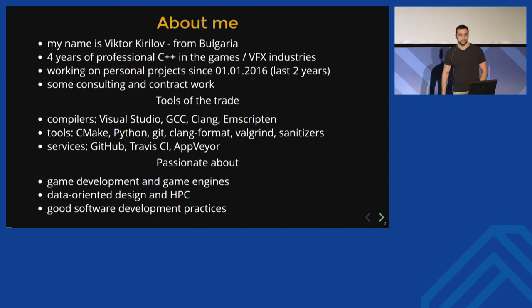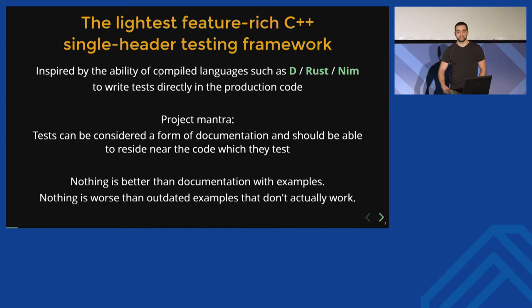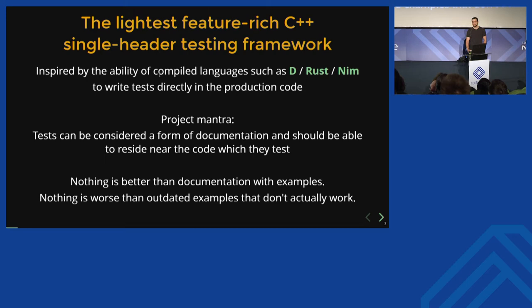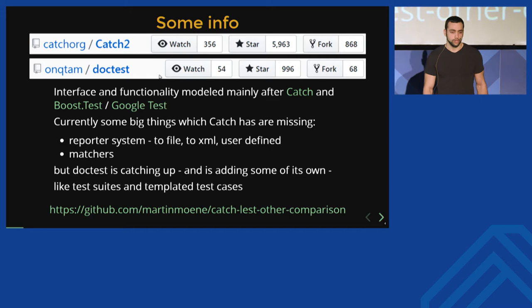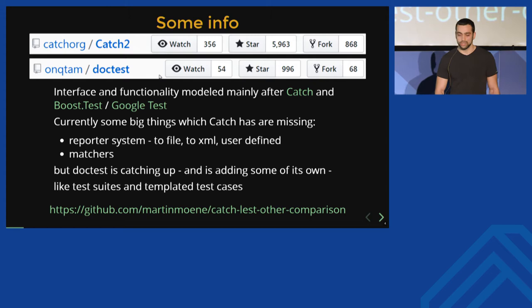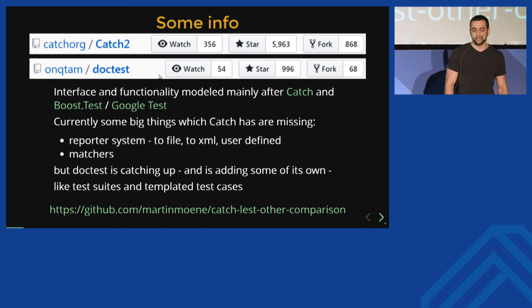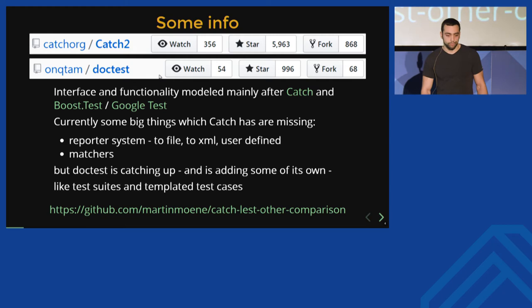I like to call Doctest the lightest feature-rich C++ single-header testing framework. It's inspired by the ability of other compiled languages such as D, Rust, and Nim to have tests written directly in the production code. The project mantra is that tests can be considered a form of documentation, and they should be able to reside near the code which they test. Doctest borrows many ideas from Catch — the interface is almost identical — and there are also some ideas taken from Boost Test and Google Test. Since Catch is currently the most similar, I'll compare it mainly with it.